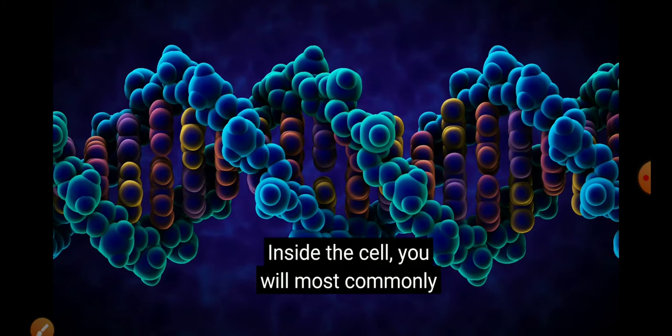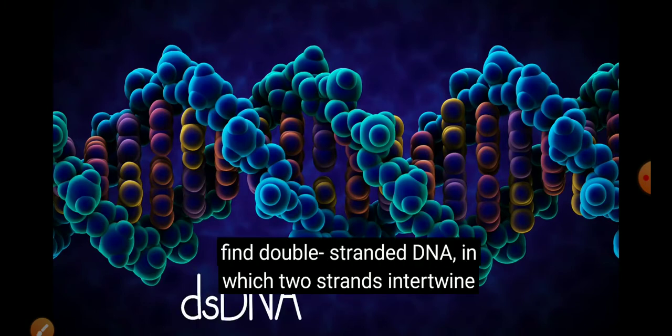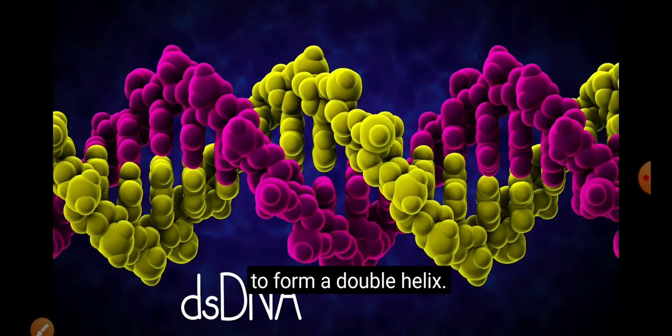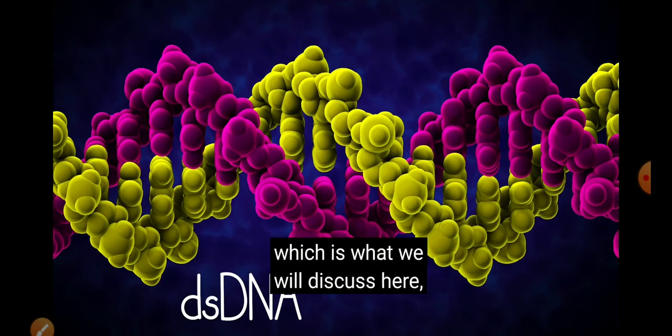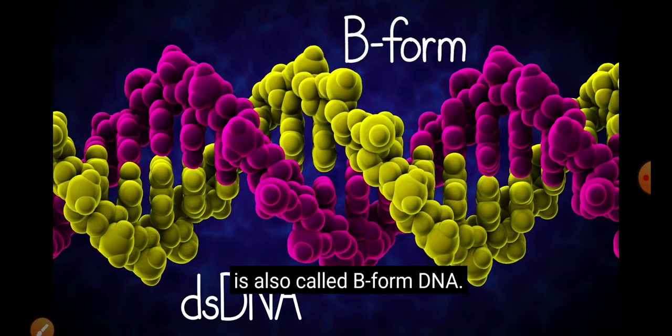Inside the cell, you will most commonly find double-stranded DNA, in which two strands intertwine to form a double helix. The most common form of the DNA double helix, which is what we will discuss here, is also called B-form DNA.